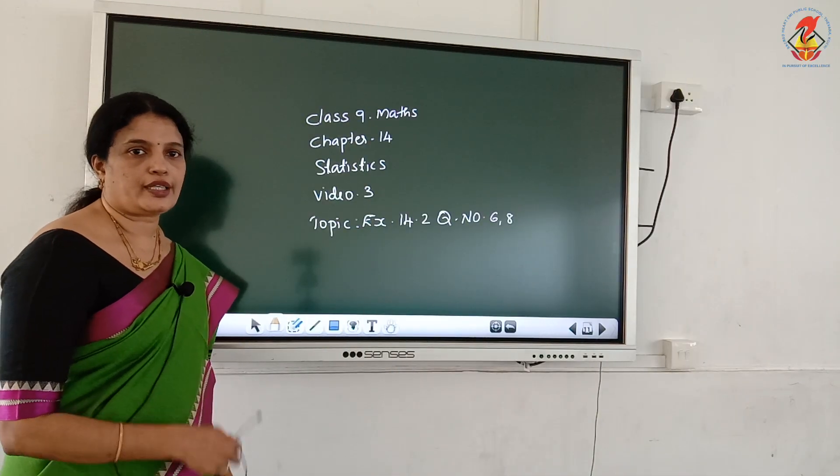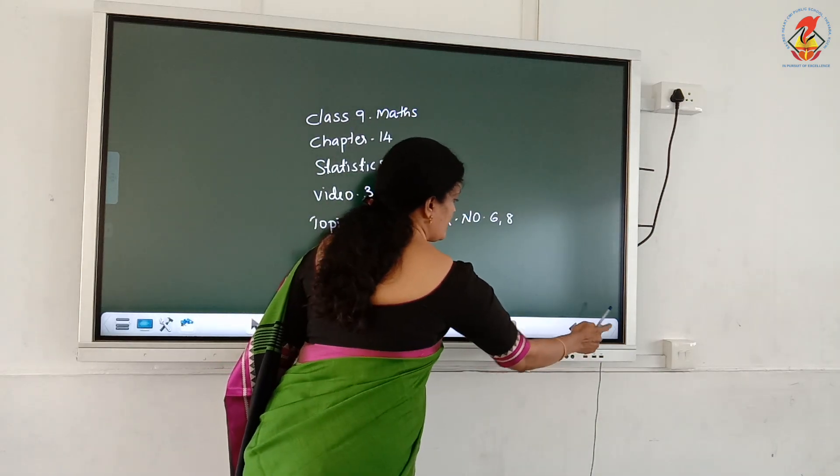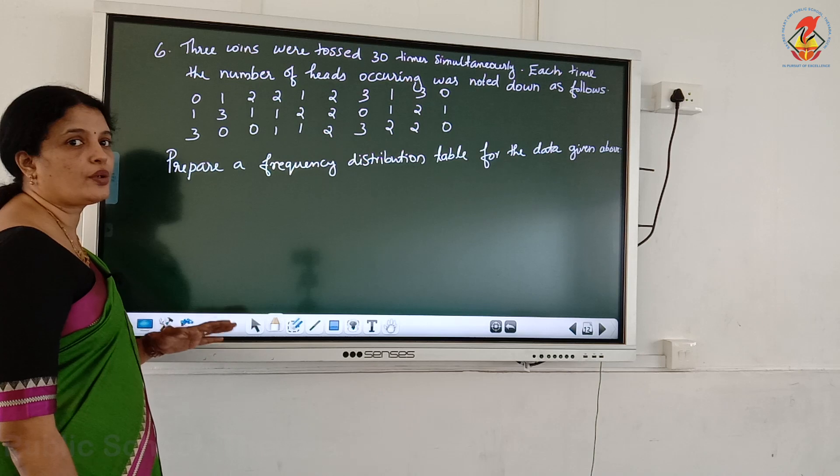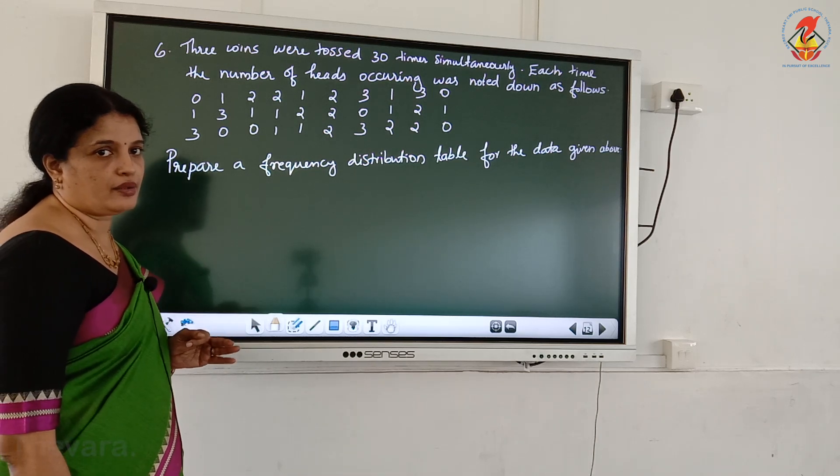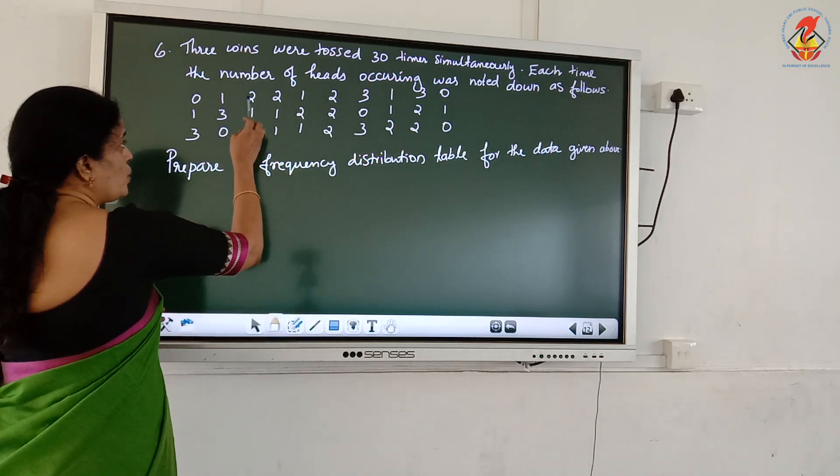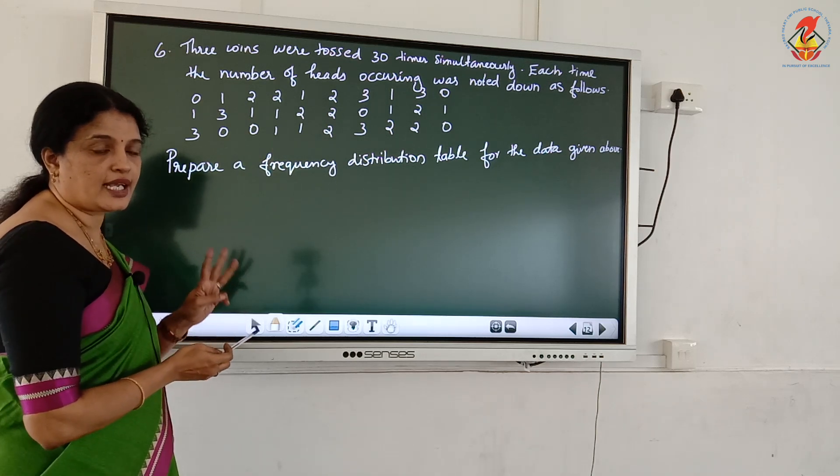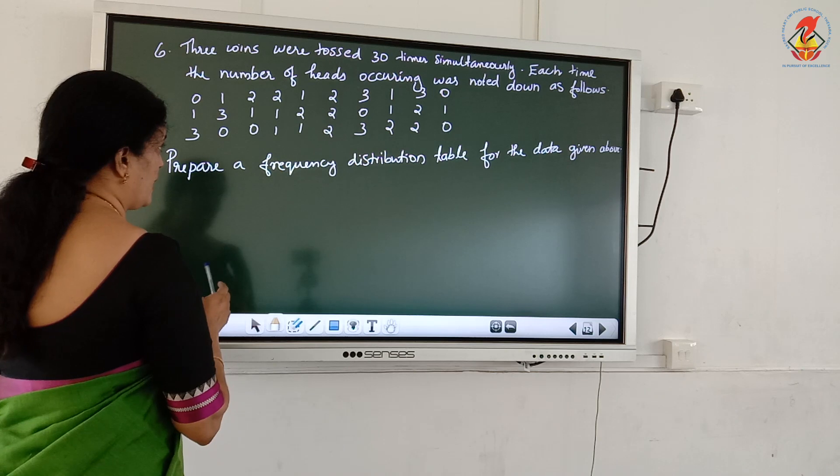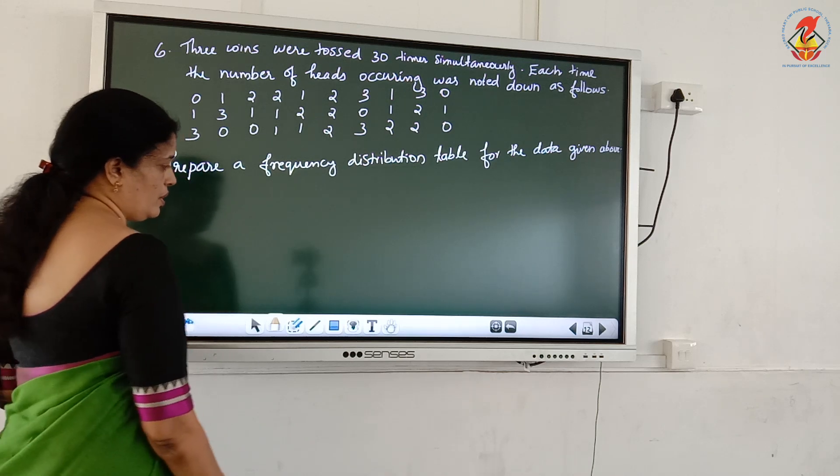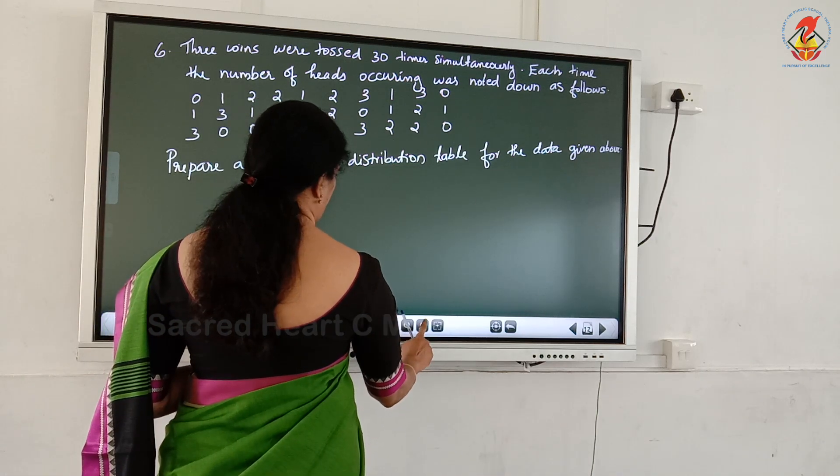Next topic, exercise 14.2, question number 6 and 8. Question number 6: three coins were tossed 30 times simultaneously each time. The number of heads occurring was noted down as follows. First is 0, what is the meaning of 0? Zero heads means three tails we got. Next, 1 head, other 2 are tails. Next is 2 heads, one is a tail. Prepare a frequency distribution table for the data given above.